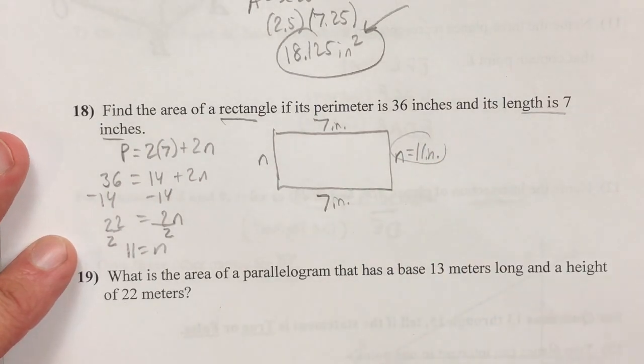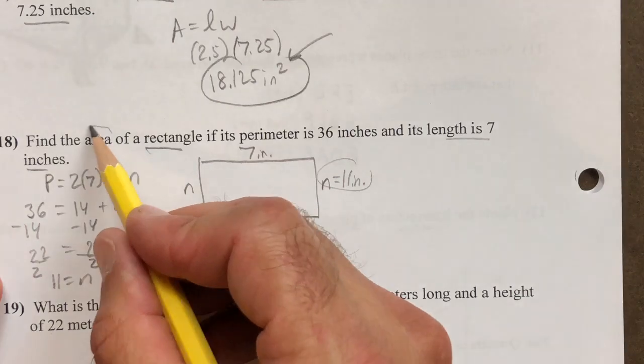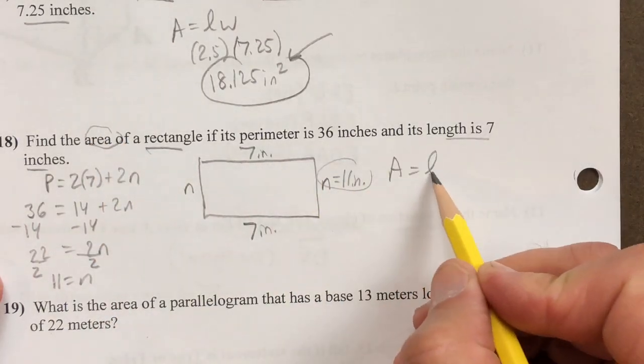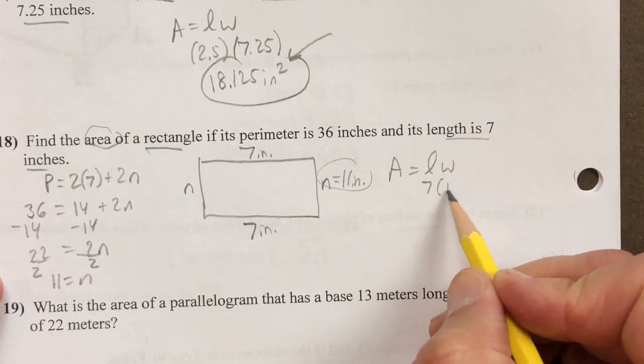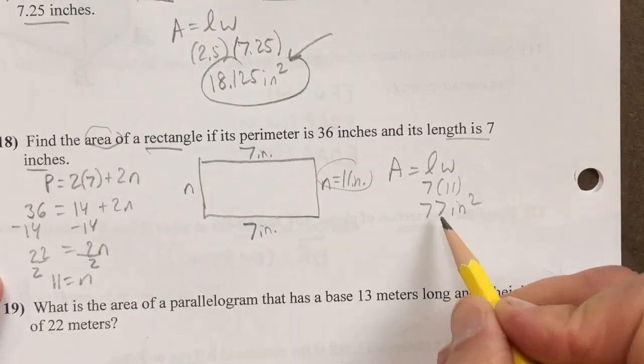And once you find the missing side of 11, you can easily find the area by multiplying the length and width seven times 11 and get 77 inches squared.